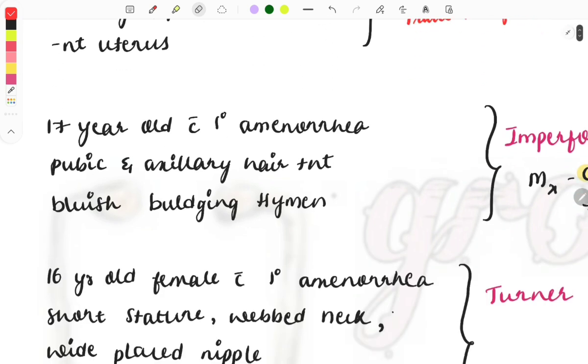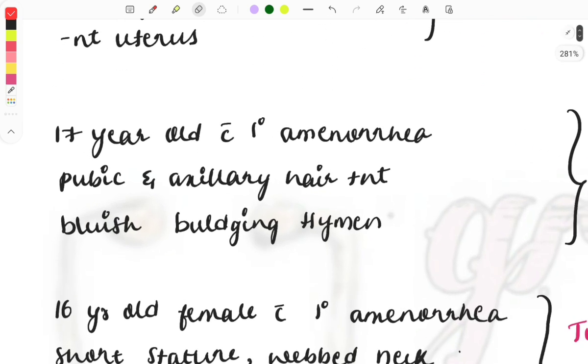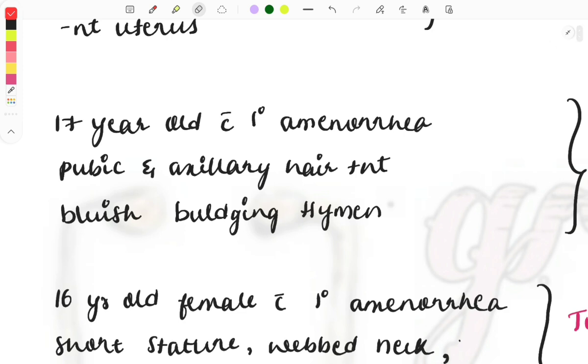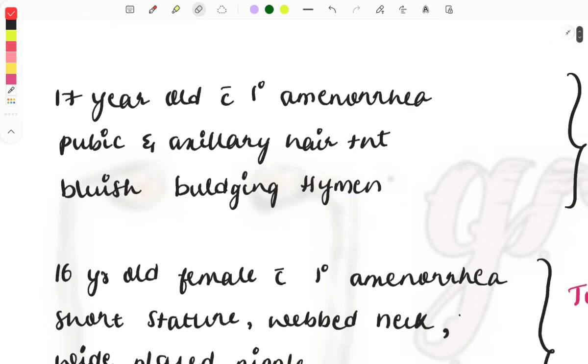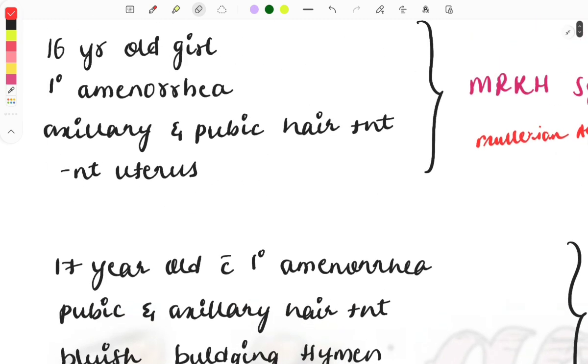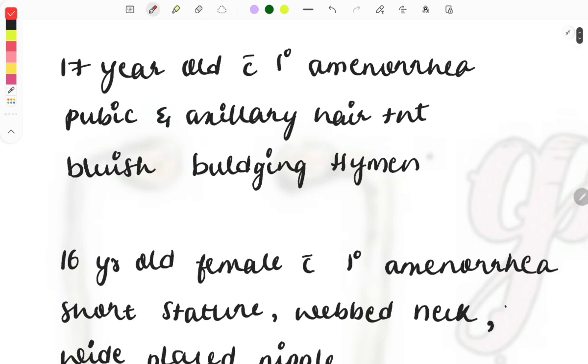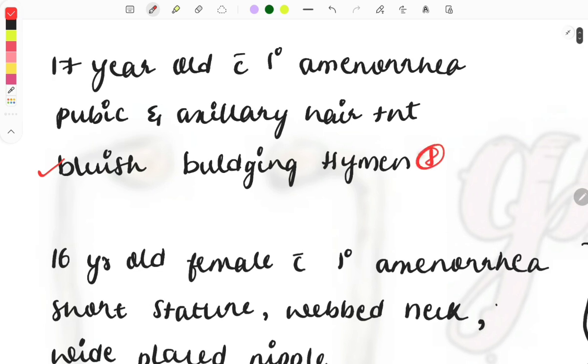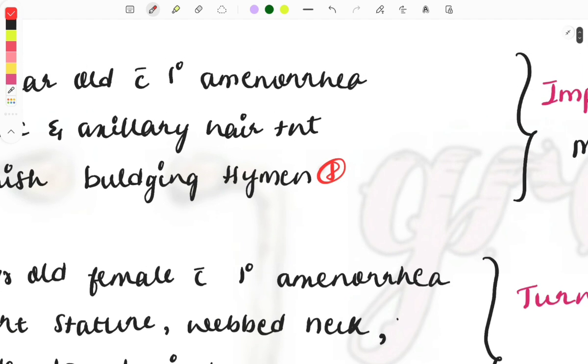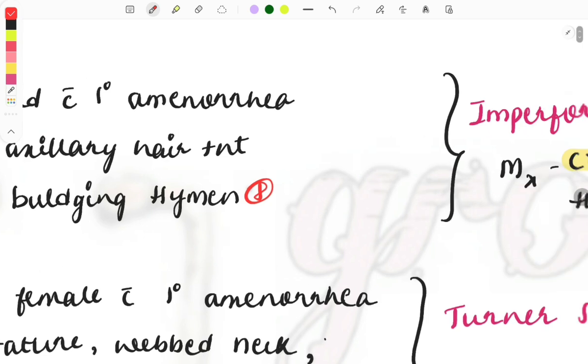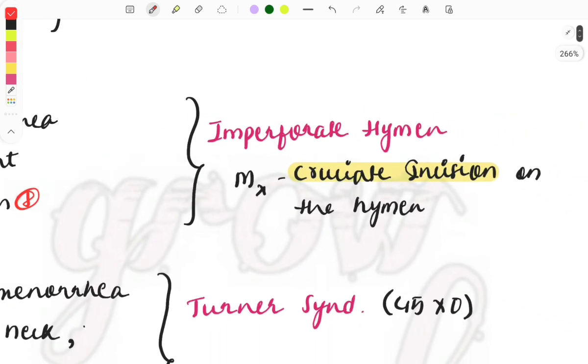Moving on to the next important question: a 17-year-old female with primary amenorrhea again, pubic and axillary hair are present - same as before. But the differentiating factor and main feature of this disease will be the bluish bulging hymen. Whenever this hint word or buzzword is given in the question, it is imperforate hymen.